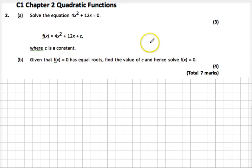Okay, so here we go. Here's question 2 from our quadratic topic assessment. We're going to start with part A and see how we get on. The first one says, and it's important, 2A: solve the equation 4x² + 12x = 0. That's worth three marks, and it stops there.